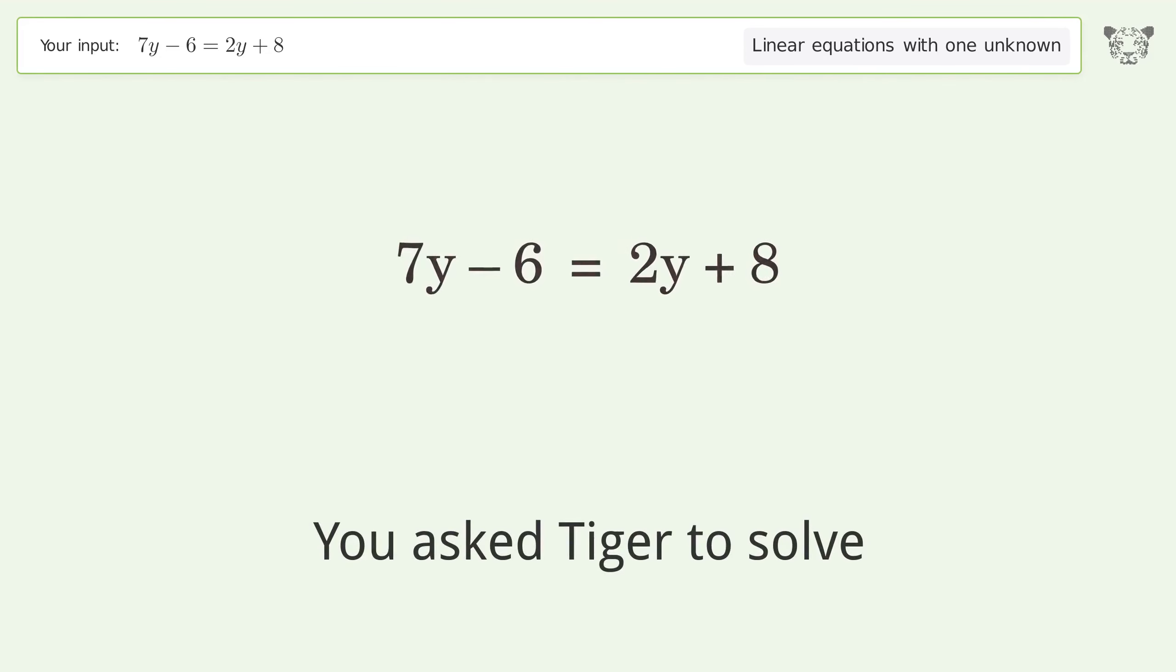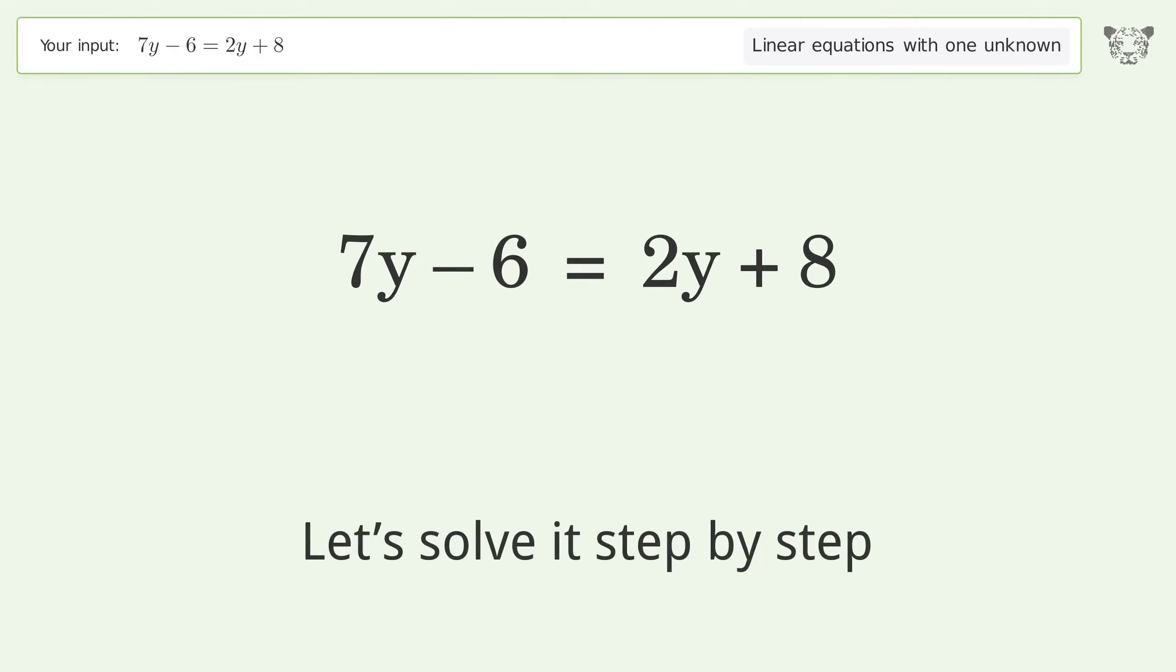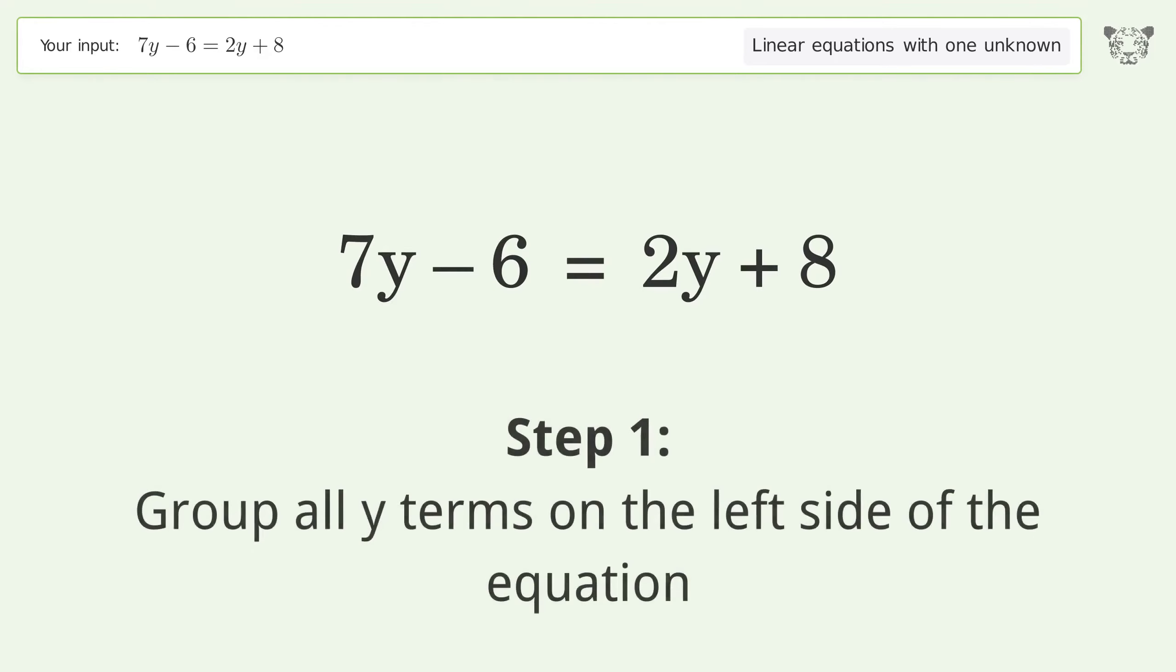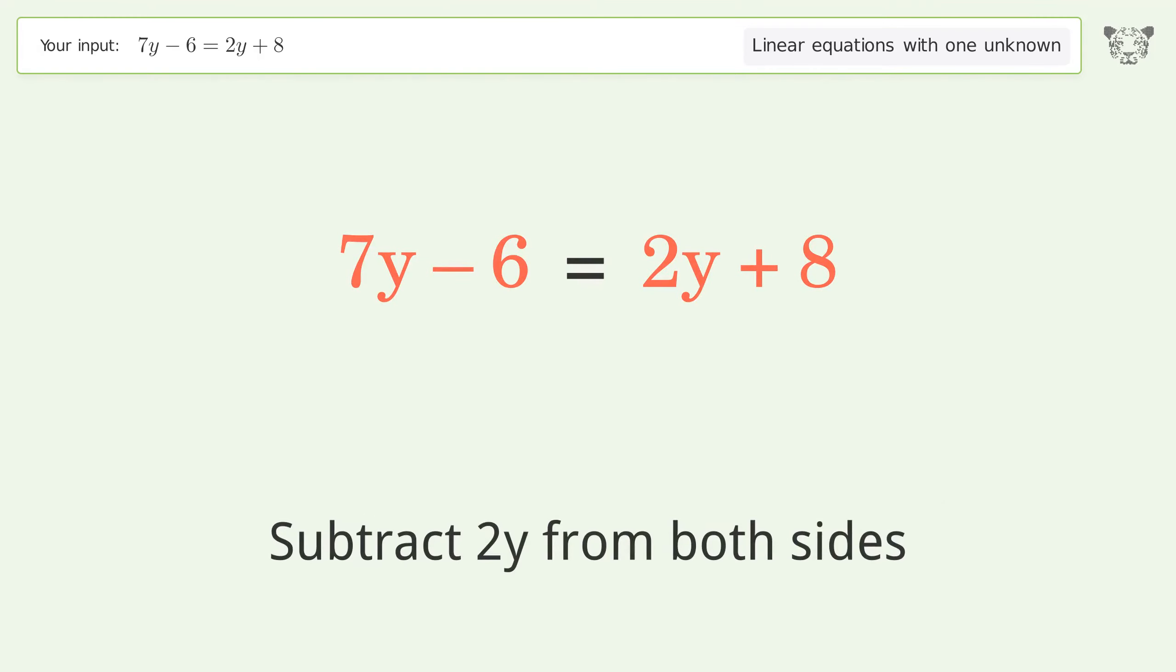You asked Tiger to solve this problem dealing with linear equations with one unknown. The final result is y equals 14 over 5. Let's solve it step by step. Group all y terms on the left side of the equation. Subtract 2y from both sides.